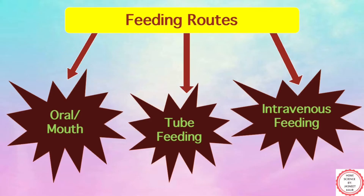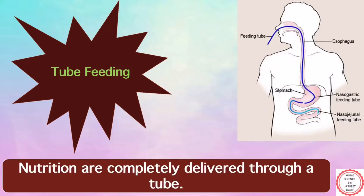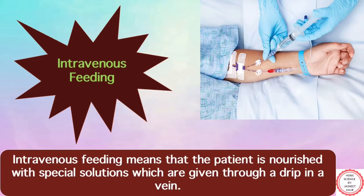Moving on to the next term used by dietitians: feeding routes. It can be further divided into three categories — oral or through mouth, tube feeding, and intravenous feeding. The best possible way for feeding a patient is oral or by mouth. However, there are certain conditions in which a person is unable to chew or swallow — for example, when the person is unconscious — in that case the person is fed through a tube. Intravenous feeding means the patient is nourished with special solutions given through a drip in a vein.